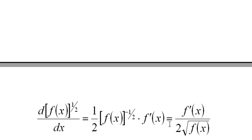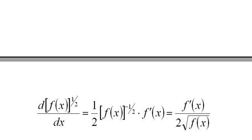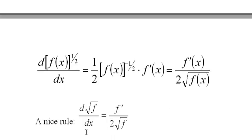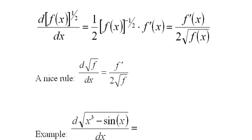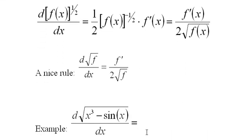Because the negative 1/2 power brings it downstairs, and you can change it back into the square root of x. So here's the nice rule that I was talking about. The derivative of the square root of f is just f' over 2 times the square root of f. And this allows you to do a lot of very complicated derivatives in your head, practically, mentally. For instance, we look at this example: the derivative of the square root of (x^3 - sin x).